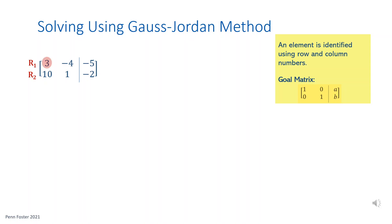One way to do so is dividing all elements of the first row by 3, but the problem with this is having to deal with fractions right off the bat. Another way to get 1 for this element is to multiply 3 times the first row so this element becomes 9, then subtract the second row, which has a 10 in its first element, minus that product 9. Element 1,1 is 3; multiply 3 times 3 to get 9, then subtract: 10 minus 9 gives the desired 1.